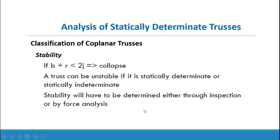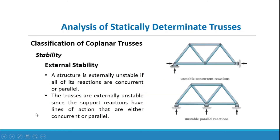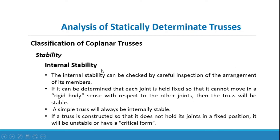A truss can be unstable whether it is statically determinate or indeterminate; stability must be determined either through inspection or by force analysis. For external stability, a structure is externally unstable if all of its reactions are concurrent or parallel. Trusses with support reactions that are either concurrent or parallel are externally unstable, illustrated by diagrams showing unstable concurrent reactions and unstable parallel reactions with no horizontal reaction component.